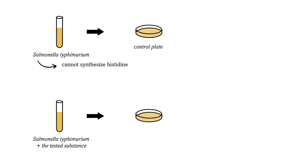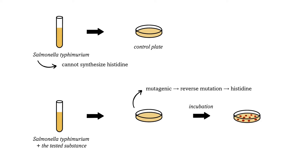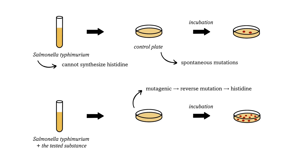If the tested substance is, in fact, mutagenic, the bacteria on the plate are going to undergo a reverse mutation that will make them capable of synthesizing histidine again. As a result, their colonies are going to grow significantly. The bacteria on the control plate are also going to grow, however, only as a result of spontaneous mutations. As these are much less frequent, the colonies are going to be much smaller.